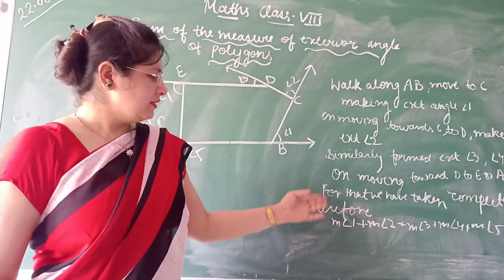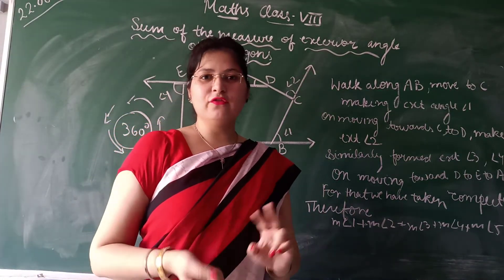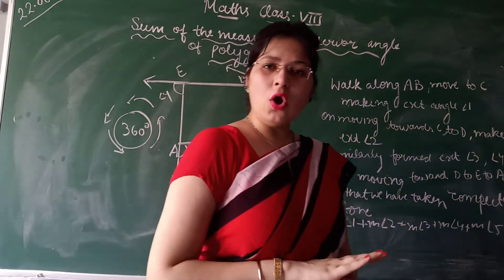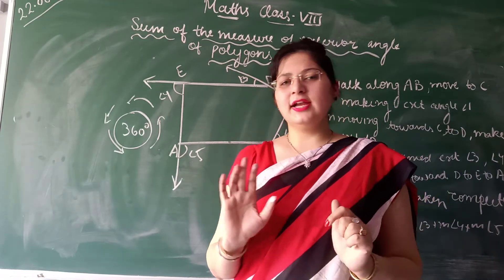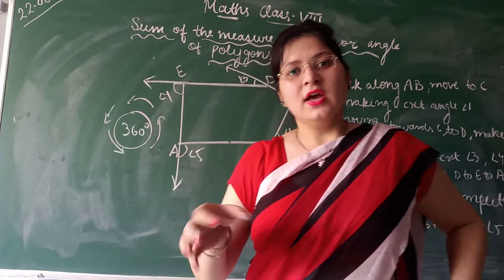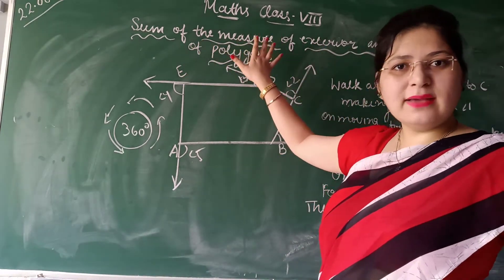And therefore the measurement of angle 1 plus angle 2 plus angle 3 plus angle 4 plus angle 5 is equal to 360 degrees. This is true for all the number of sides. When you take any number of polygon you will form 3 sides, 4 sides, 5 sides, sum of the measure of the exterior angle of the polygon.